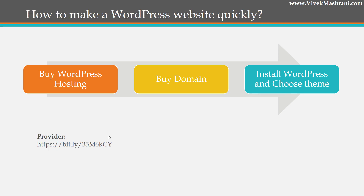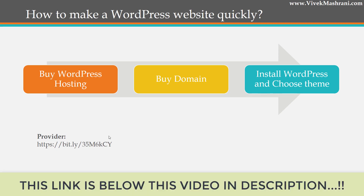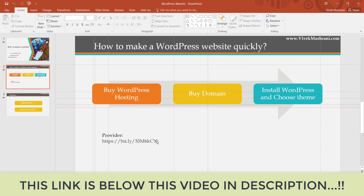I found a hosting where you can directly build a WordPress website and I'll build my website with you to a basic extent. The three steps to making a WordPress website are: first, buy a hosting — a place where all your data will sit; second, buy a domain, like vivekmashrani.com, which is the address pointing to your site; and third, download WordPress and choose a theme, which is the basic layout of your website.